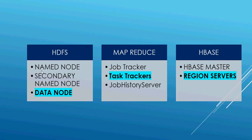The Secondary NameNode is responsible for performing periodic checkpoints on the NameNode. In the event of a NameNode failure, the Secondary NameNode takes over and you can restart the NameNode using this checkpoint. This makes sure the system stays in sync and a NameNode failure does not affect your functionality.